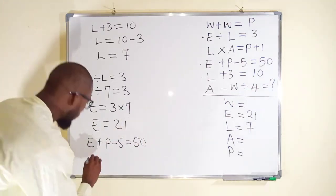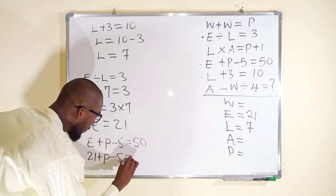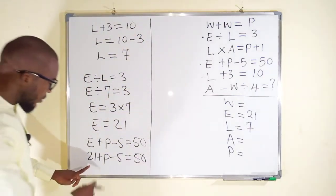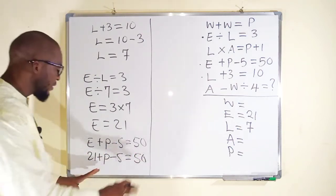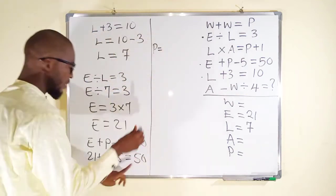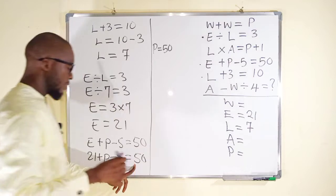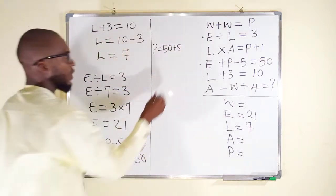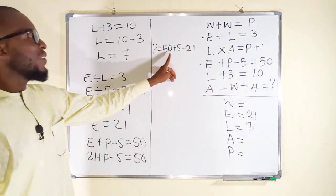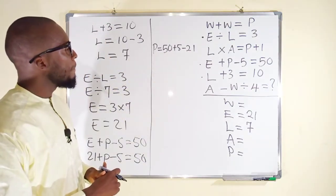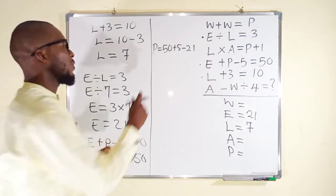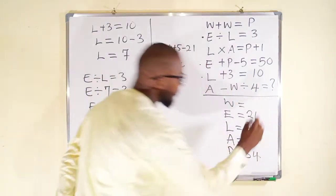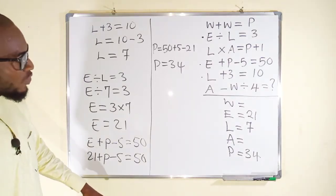But E is 21. So we have 21 plus P minus 5 is equal to 50. What do we do? We can take all of them to the right, leaving P alone. So P will be equal to 50 plus 5 minus 21. P is equal to 34. P is equal to 34. You can see we are progressing. P is 34.